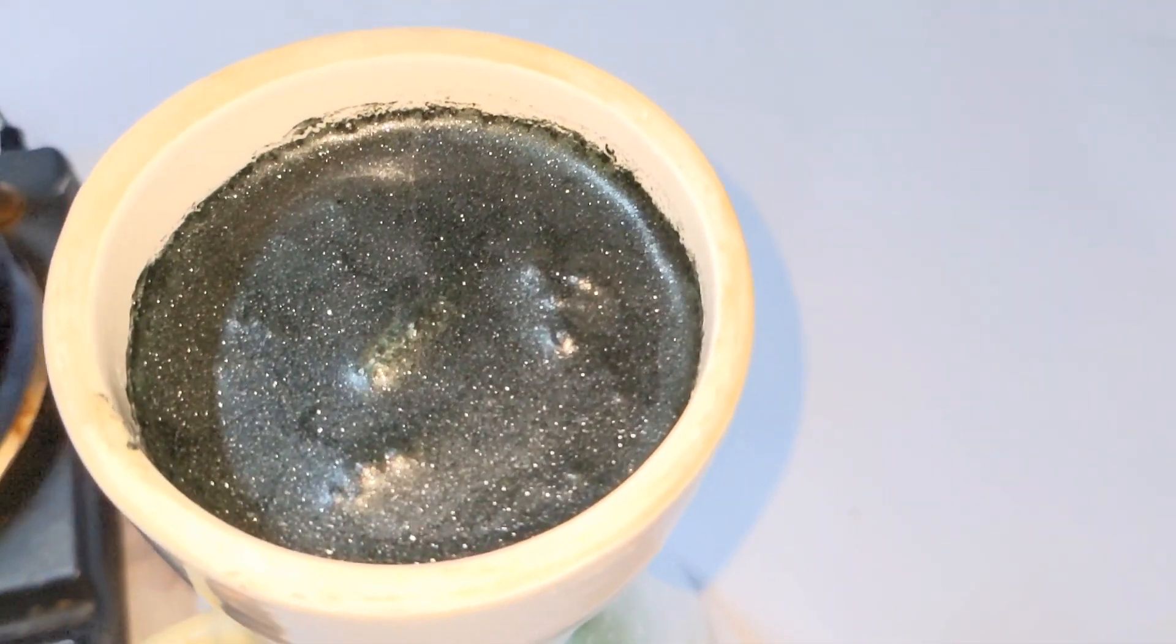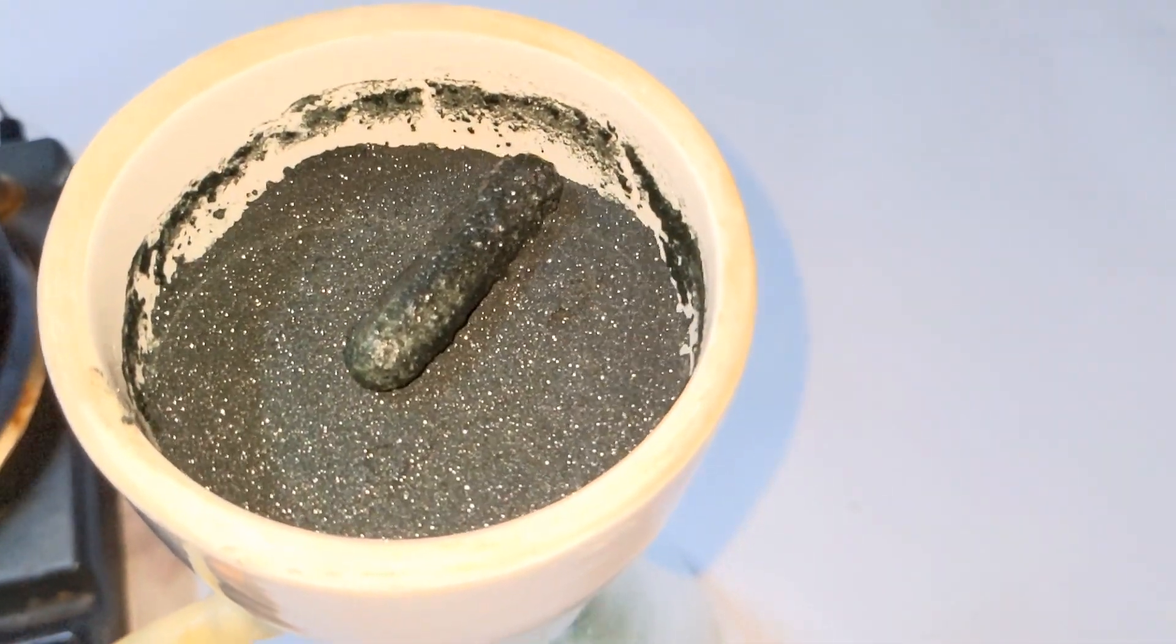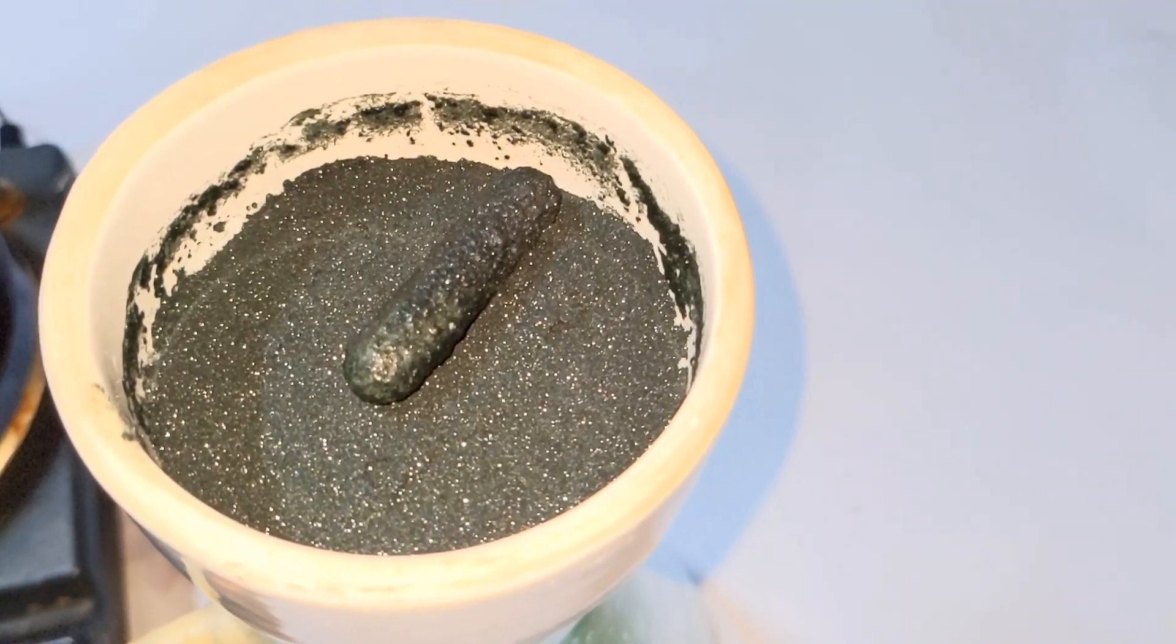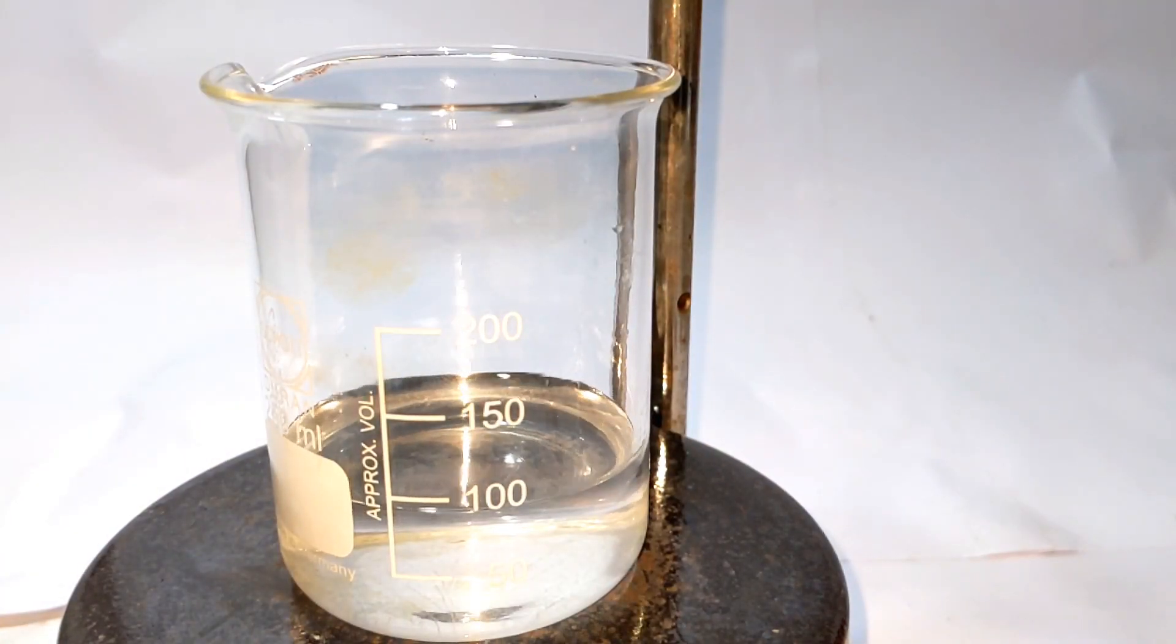After filtration, we wash the precipitate 2 or 3 times with cold distilled water and then let the vacuum run so that the compound will be dry.